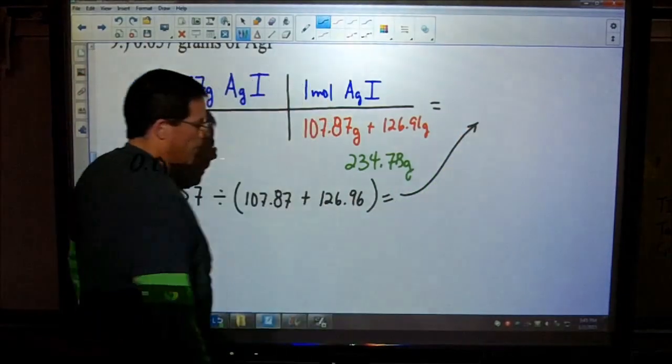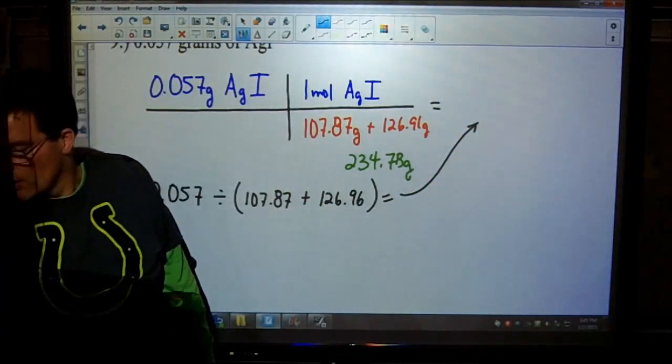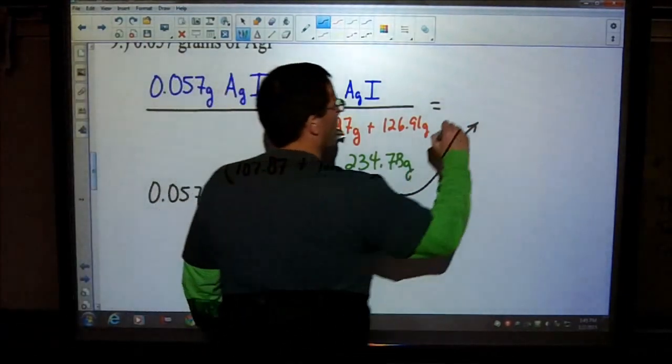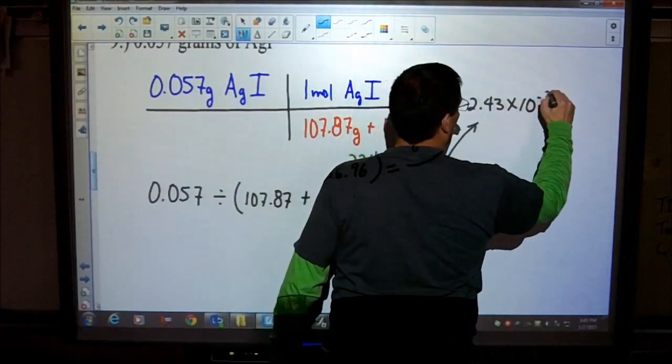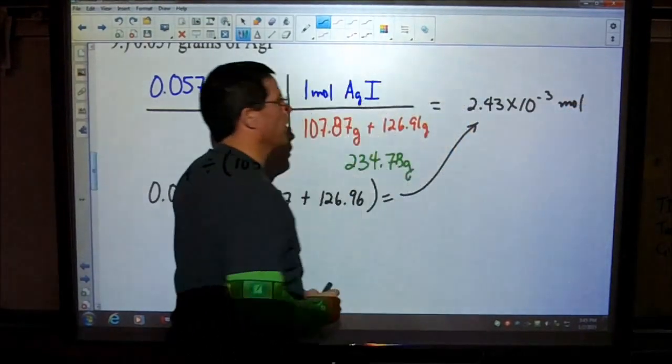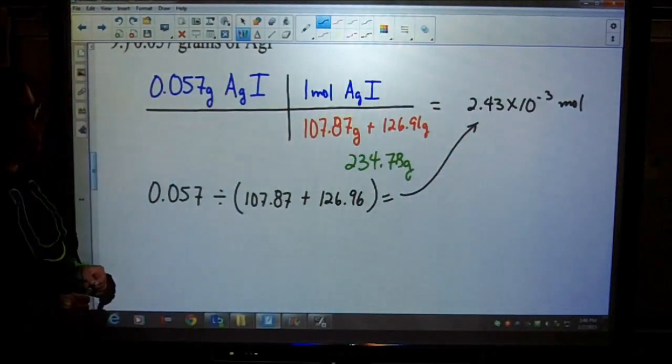This is for one mole of silver iodide. To find how many moles we have, take 0.507 divided by, open up your parentheses, 107.87 plus 126.96. Close that parentheses. That gives us around 2.43 times 10 to the negative 3 moles, a very small amount there.